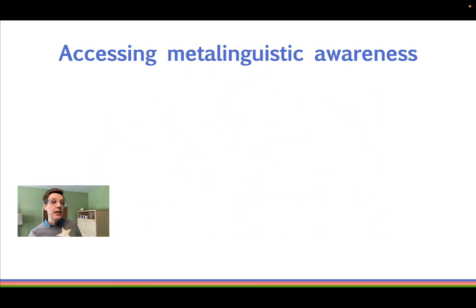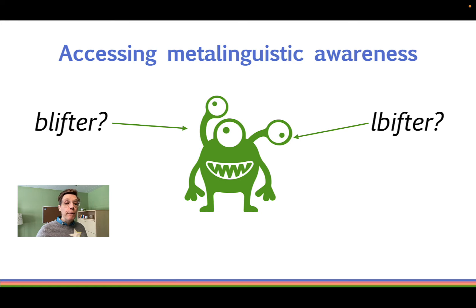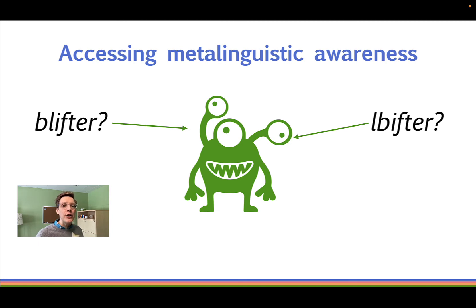Here's an example of accessing your metalinguistic awareness. Say you want to create a new English word for a character in a game. Are you going to call your cute little creature a blifter or a libifter? Neither of these forms exist in English, but they both use sounds that are part of English phonetics. You probably have a strong feeling that blifter is an okay name for your new creature, while libifter is a pretty terrible name. Notice that your sense that libifter is wrong is not a prescriptive sense — it's not that it sounds rude or you get in trouble for combining those sounds that way. It just can't happen.